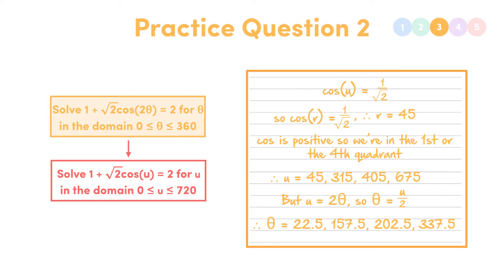In this case, we had a 2 theta, so we had to double the domain. A similar thing would be if we had theta on 2. Then we would need to halve the domain. As you get more practice, you'll get more used to this kind of thing, and you won't need to do the u equals thing. You'll just be able to do it straight away. So with that, let's tackle our last question.